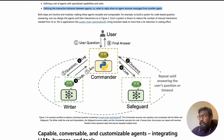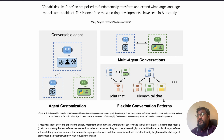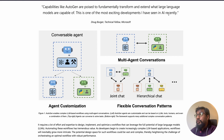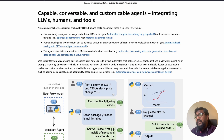As you can see, there is a commander agent, a writer agent, and a safeguard agent. Overall, you can define agents and interactions — it's not necessarily just a simple agent conversing with a human being. You can also have multi-agent conversations, with agents talking to each other, or have hierarchical or more complicated systems.